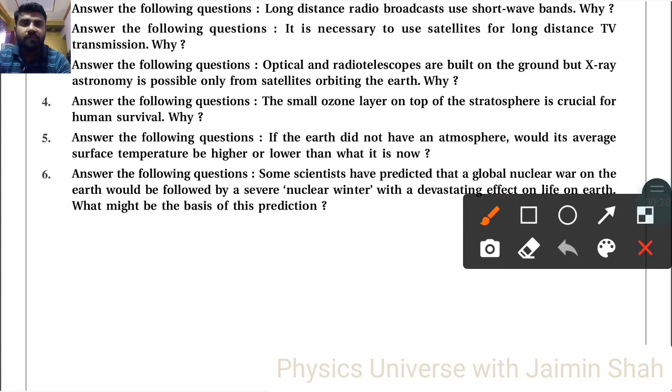Why? Because of reflection from satellites. The rays are reflected from satellites, so for long distance we are using satellites for TV transmission. Optical and radio telescopes are built on the ground, but X-ray astronomy is possible only from satellites orbiting the earth.